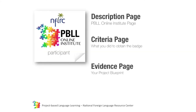Regarding the badge, as we mentioned at the beginning, those of you who complete the Online Institute requirements — which is basically turning in the blueprint — will receive a badge. The badge is basically an image, like the one that you see to the left, which contains links to three elements. One of those links is a connection to the description page, which is the same page used when you learn about this institute. The criteria page specifies what you did to obtain the badge. And the evidence page is basically a link that you will provide to us, which takes people to your blueprint — the evidence that you have complied with the requirements of this institute.